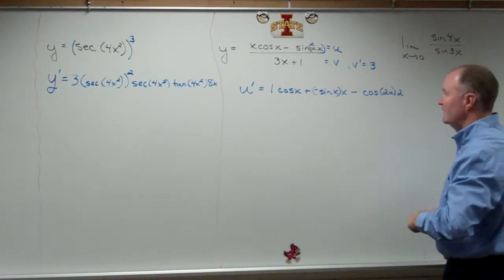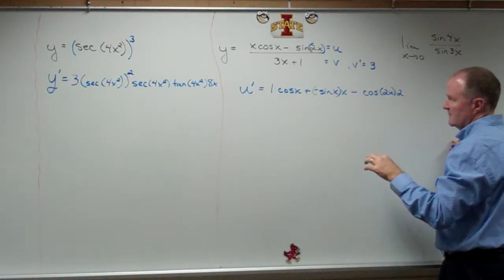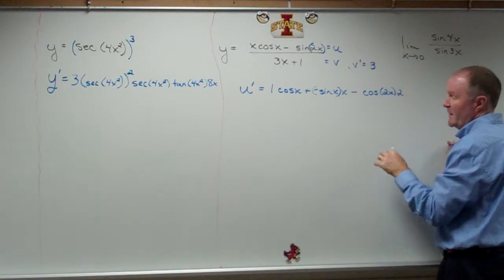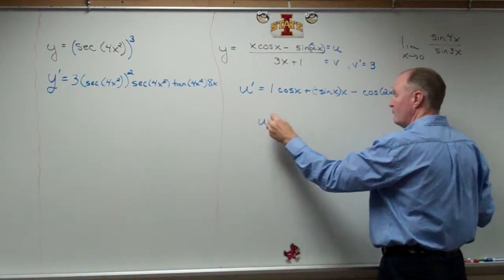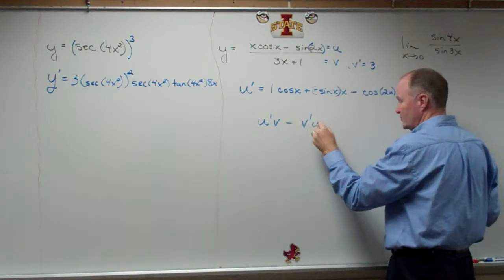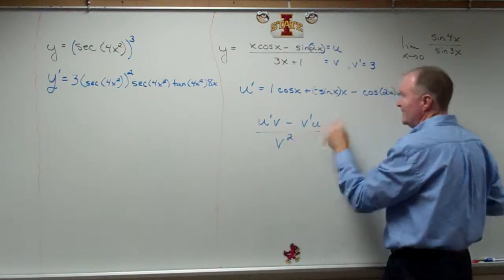No, I'm good. It's a mess. It's u prime v minus v prime u all over v squared. How's that? You guys can do the rest.